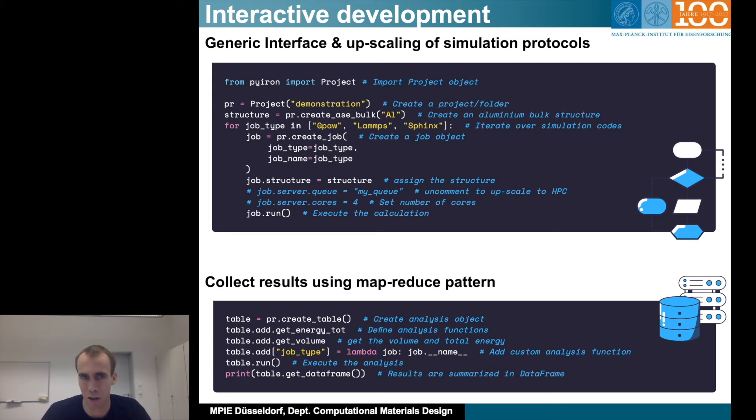For each of these names, which are just stored here as strings, we create them as job types. We then create jobs of this type. We assign the structure that we created above. We can then assign the queue if you want to submit it to the high-performance cluster or set the number of cores, and we just execute the calculation. So that's really the important part here, having the generic interface. It's very easy to switch between different codes, which really enables a lot of development, going from density functional theory to an interatomic potential and then back, and really accelerate the development of simulation protocols with this.